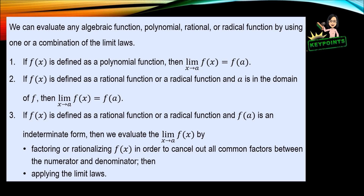Now we are done with the different limit laws. Remember that we can evaluate any algebraic function — polynomial, rational, or radical — using one or a combination of the limit laws. If f(x) is a polynomial function, then the limit of f(x) as x approaches a is f(a). If f(x) is a rational or radical function and a is in the domain of f, then the limit of f(x) as x approaches a is also f(a). However, if f(a) is an indeterminate form, then we evaluate the limit by rationalizing or factoring to cancel common factors, and then apply the limit laws.